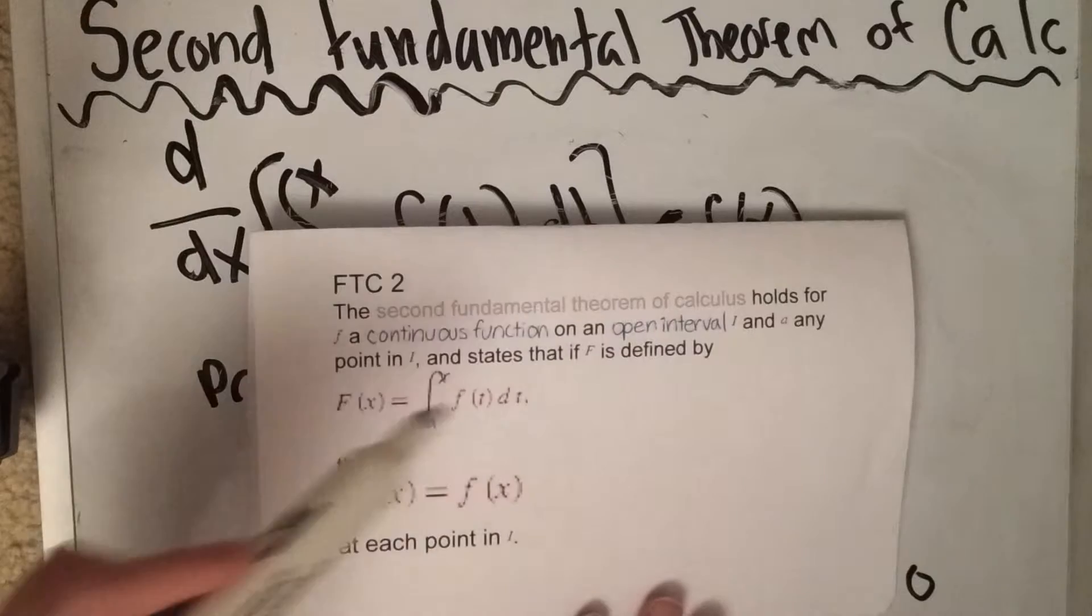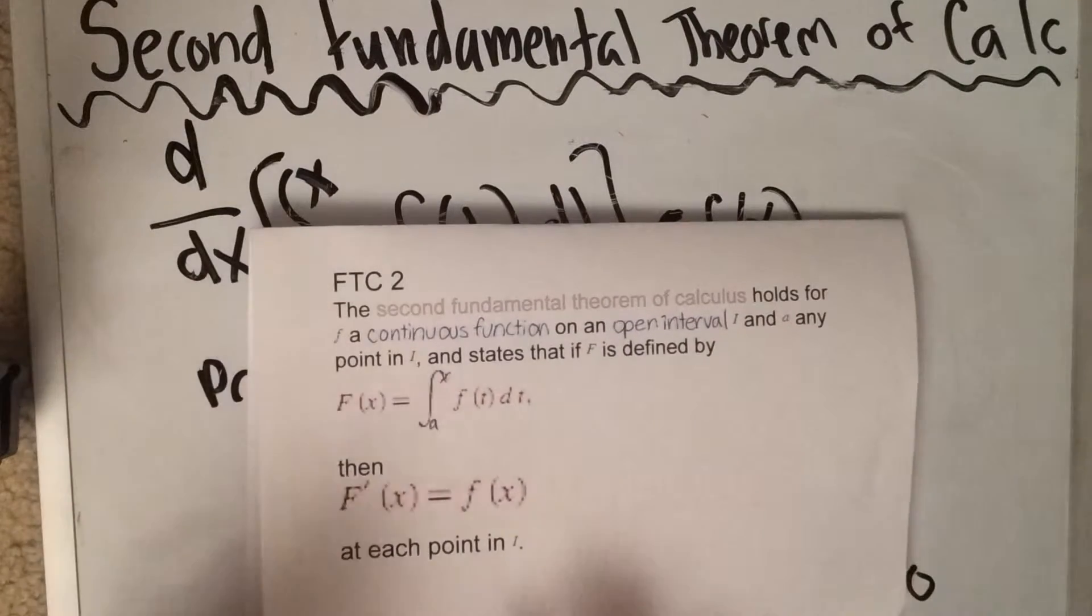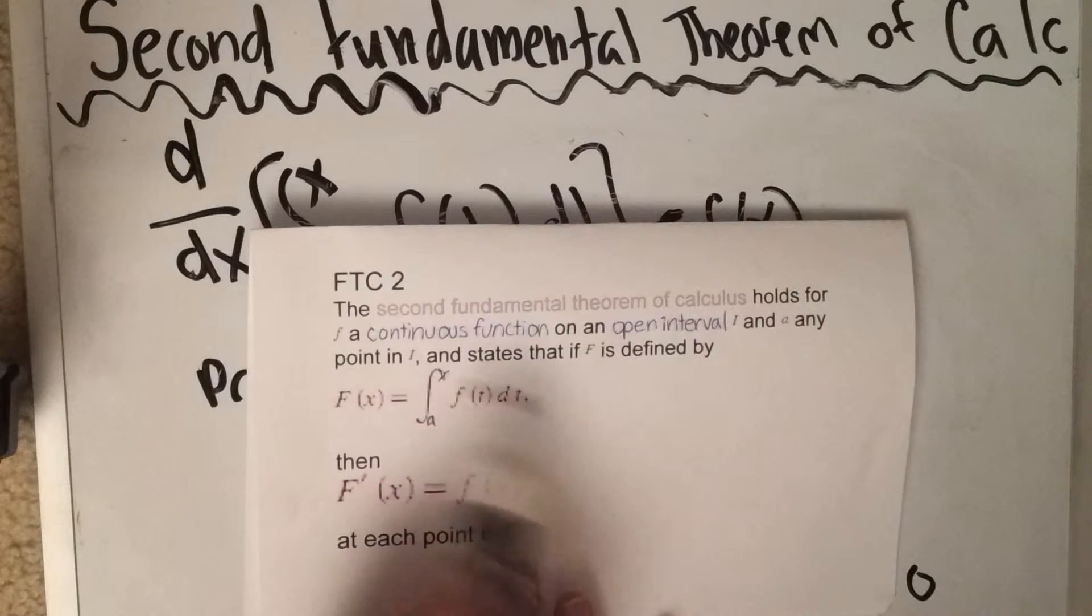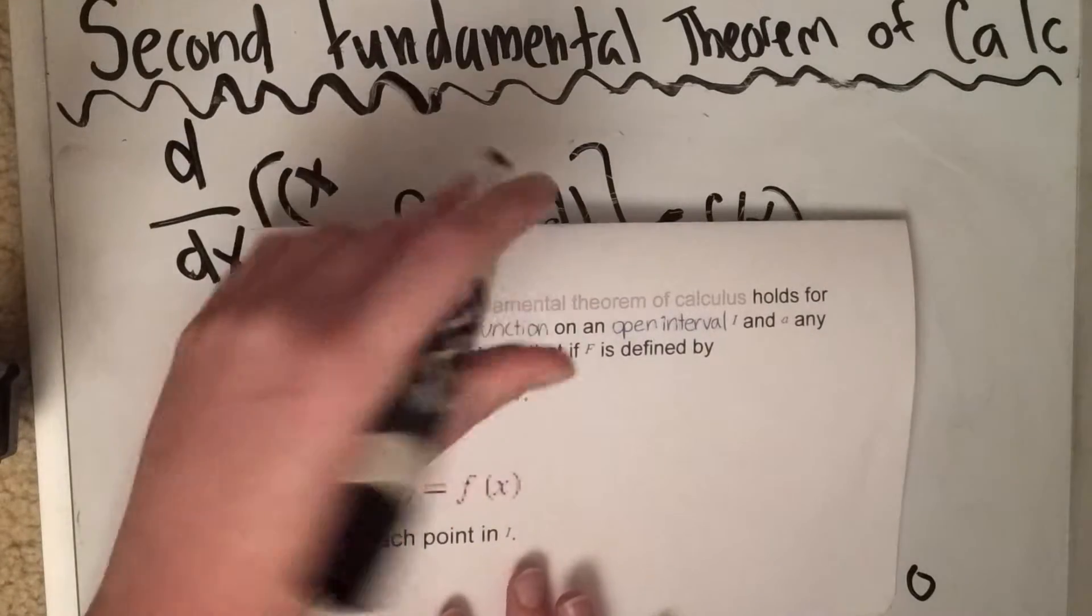then F prime of x equals little f of x at each point in i. So what this is basically saying is the derivative of this is just going to be the original function because the derivative and the integral will cancel each other out, so it'll just make the little f of x.